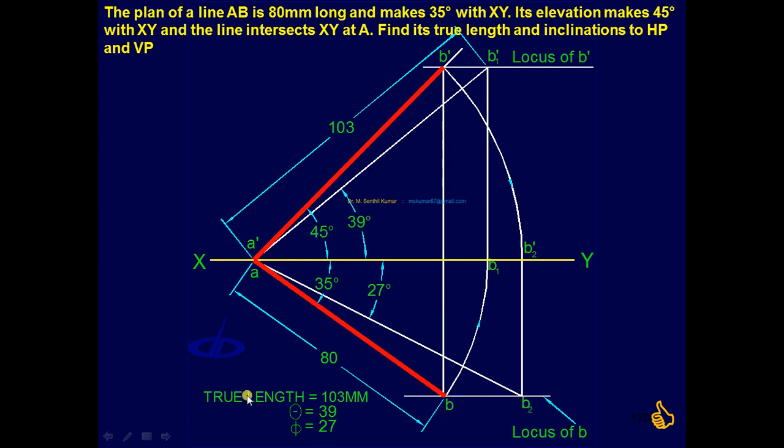So true length is 103 mm. Theta is 39 degrees. Pi is 27 degrees. This is the answer for this problem.